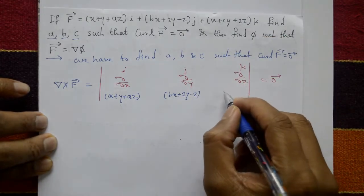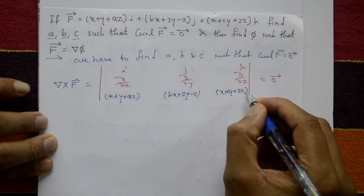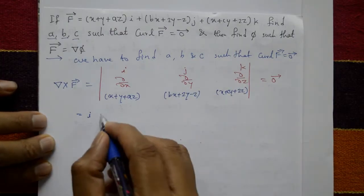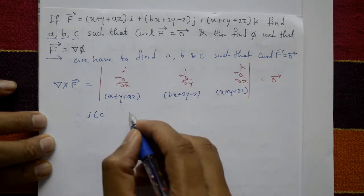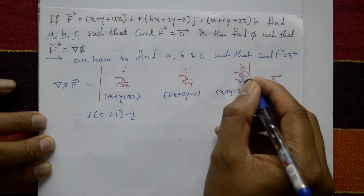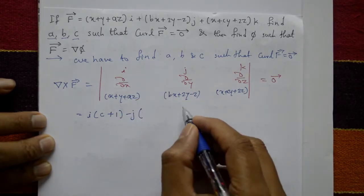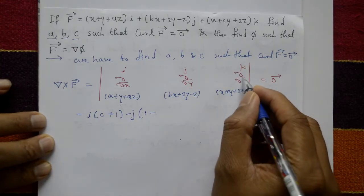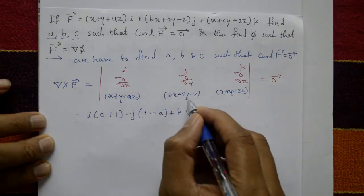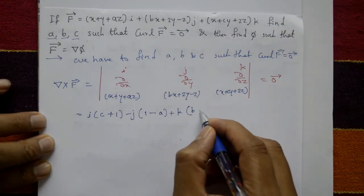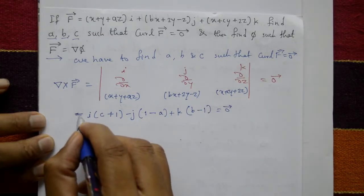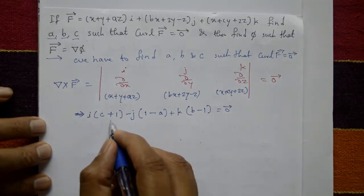The components are: i component is x + y + az, j component is bx + 2y - z, and k component is x + cy + 2z. Expanding this determinant: for i, differentiate the k component with respect to y giving c, and the j component with respect to z giving -1, so we get c + 1. For j, differentiate k with respect to x giving 1, and the j component with respect to z giving b minus. For k, differentiate j with respect to y giving b minus 1.